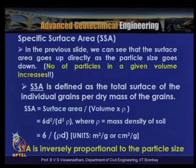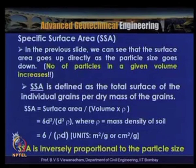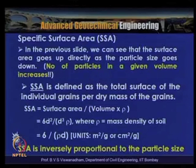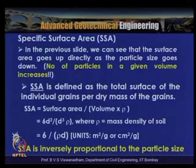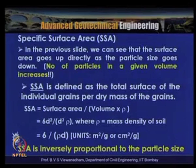SSA is defined as the total surface area of individual grains per dry mass of the grains. SSA = surface area / (volume × ρ) = 6d² / (d³ × ρ) = 6/(ρd), where ρ is the mass density of the soil. Units work out to either m²/g or cm²/g.